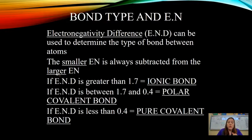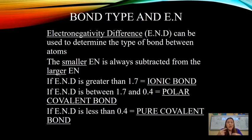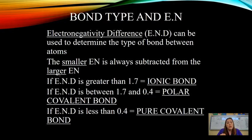The larger the electronegativity difference, the more likely it's going to be an ionic bond. Ionic bonds form when the electronegativity difference is greater than 1.7 — one atom actually takes the electrons from the other rather than truly sharing them. If the electronegativity difference is between 0.4 and 1.7, that's considered a polar covalent bond, where electrons are shared but not evenly.